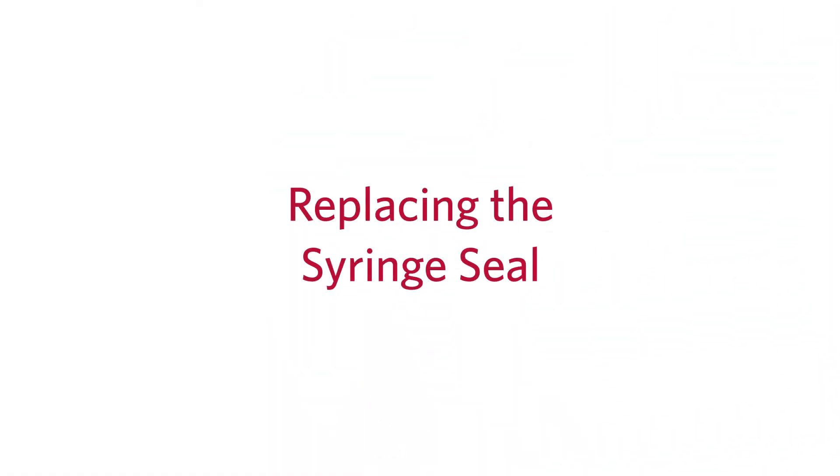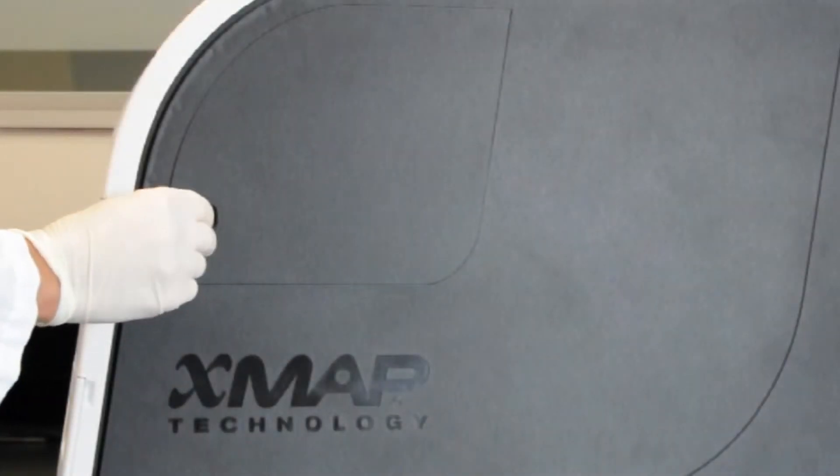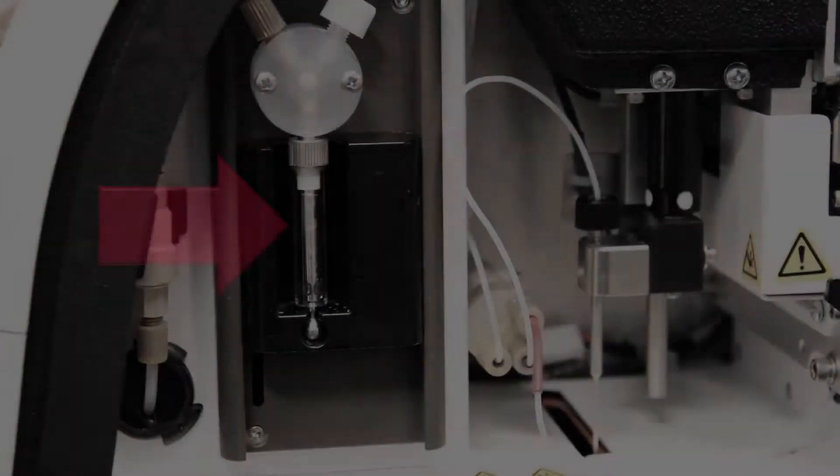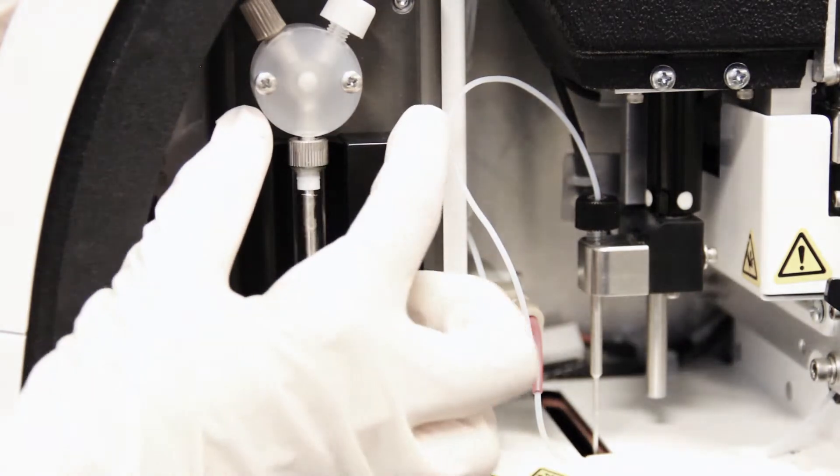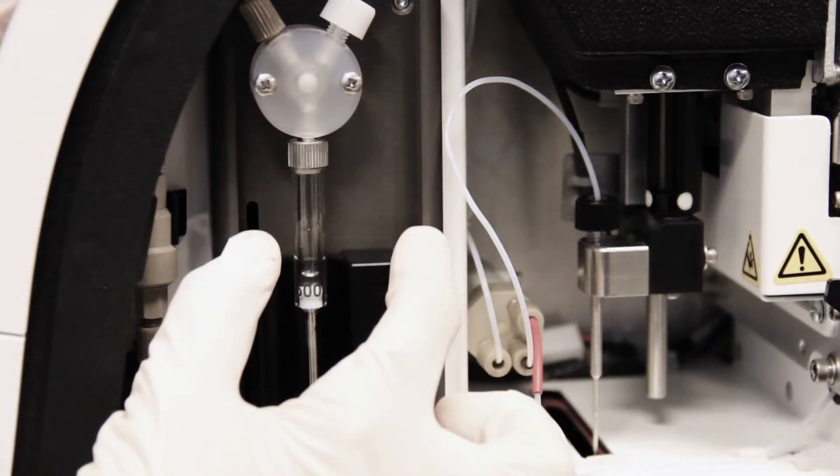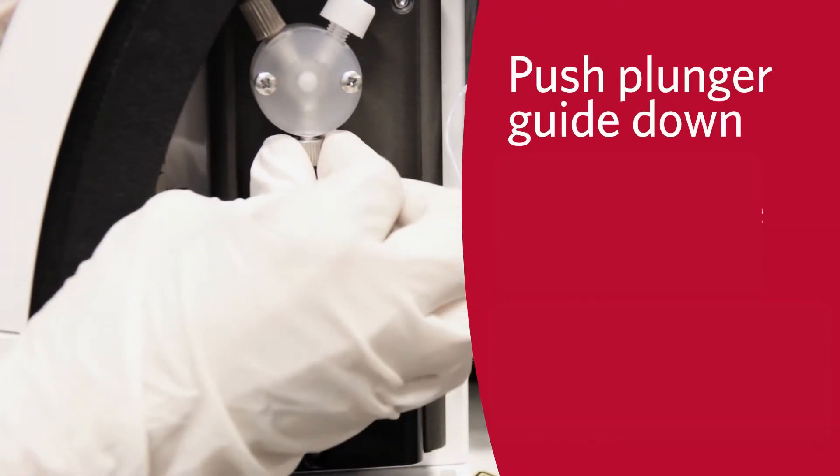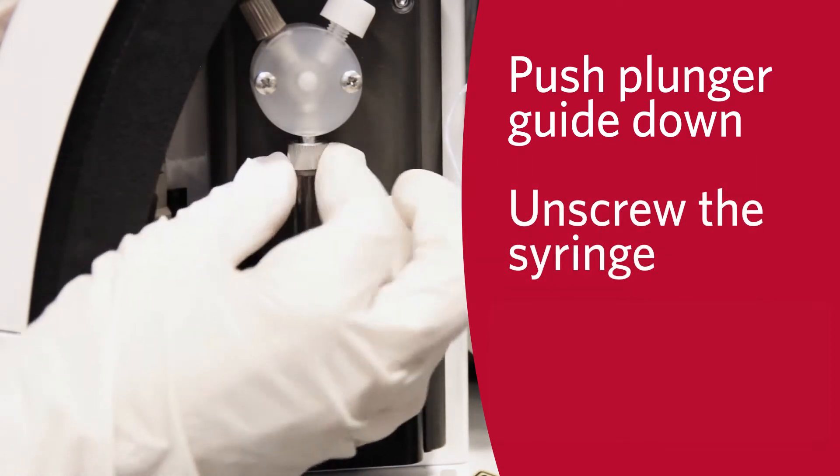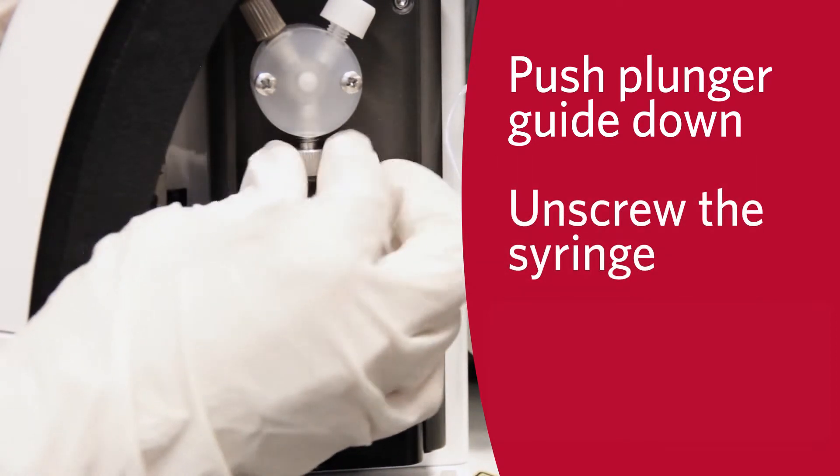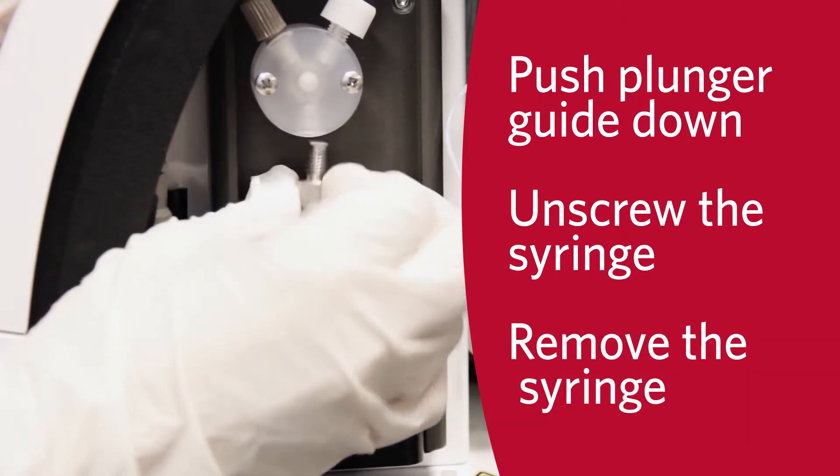Next, we will cover replacing the syringe seal. Open the side access door of the MagPix and locate the syringe. Using some force, push the plunger guide down and unscrew the top of the syringe from its housing. Carefully remove it.